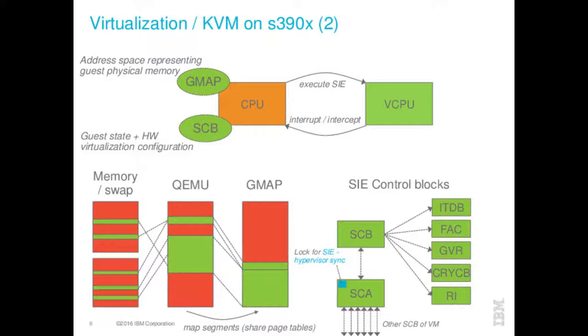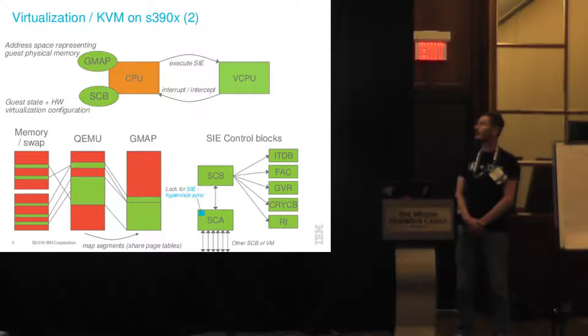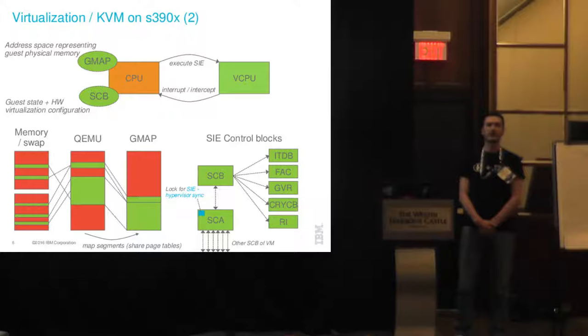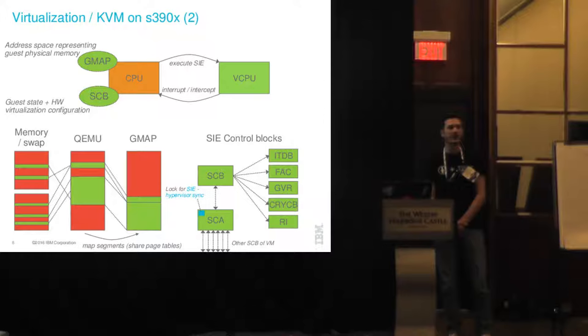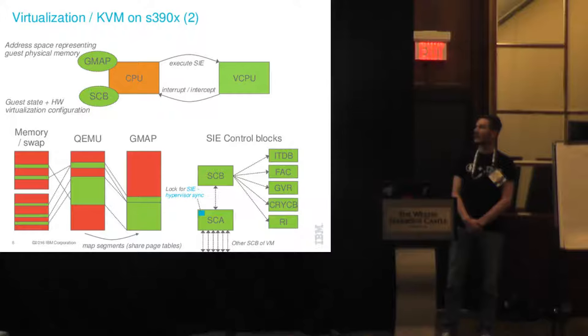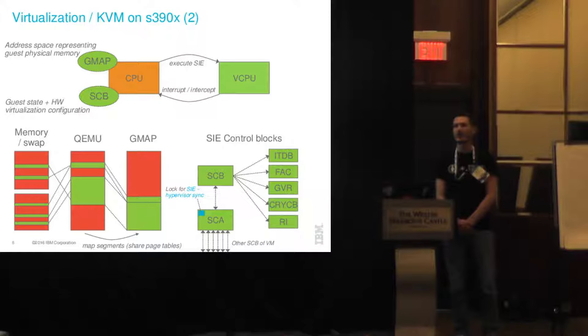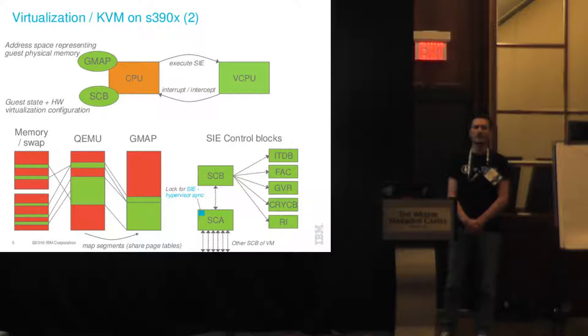As soon as the CPU executes the SIE instruction it executes the virtual CPU, and as soon as there is a host interrupt or an intercept to be processed — for example to emulate an instruction — we fall back into the CPU. We have to describe the guest state via the SIE control block, which describes the state of the virtual CPU, and the gmap (guest mapping), which is an address space representing guest physical memory. The SIE instruction is executed in this address space given the SIE control block, and then the vCPU can run.